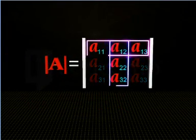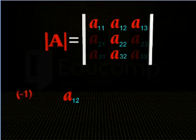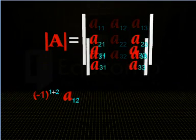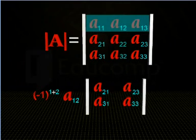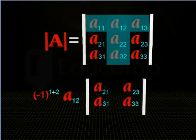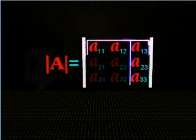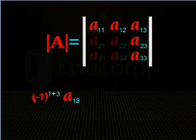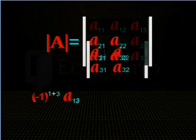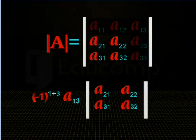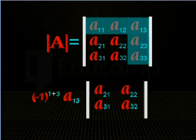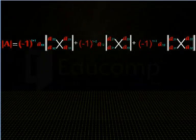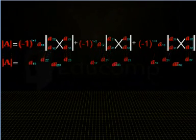Next, multiply the second element of the first row, A12, by minus 1 raised to the power sum of suffixes in A12, and then multiply the product with the determinant obtained by deleting the first row and second column of determinant A. Similarly, multiply the third element A13 by minus 1 raised to the power sum of suffixes in A13, and multiply with the determinant obtained by deleting the first row and third column. Finally, add the three terms and solve them as in the case of a second order determinant to obtain the expansion of determinant A.